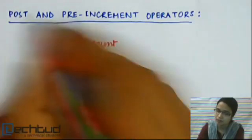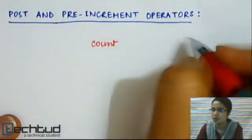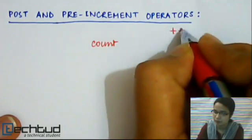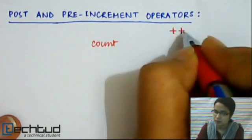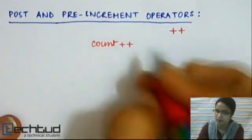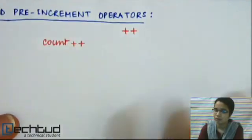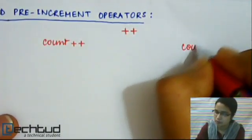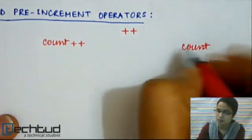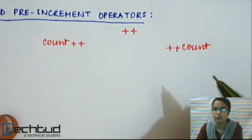The symbol for both POST and PRE-increment operators is ++. If you put it after your variable, this will act as a POST-increment operator, but if you put it before your variable, it will act as a PRE-increment operator.